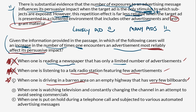I'm going to star option C, because right now C is my top contender. When one is watching television — well, there's some program material — and constantly changing the channel in an attempt to avoid seeing commercials. That may be a low ad density, but that's a lot of clutter as far as program material goes, so I'm going to cross that off and say no.